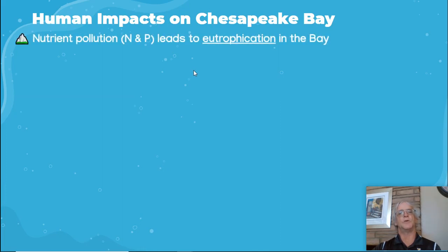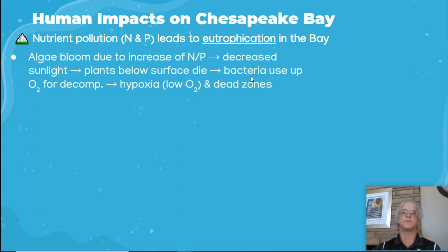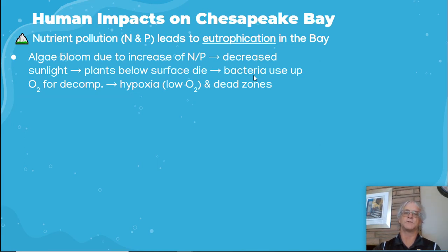Human impacts in the Chesapeake Bay: nutrient pollution — the nitrogen and phosphorus — leads to eutrophication of the bay. Algae blooms are due to the increase in nitrogen and phosphorus. The algae blooms decrease sunlight so that plants below the surface die. The bacteria then break down the plants and use up the dissolved oxygen for decomposition. This leads to hypoxia, or low oxygen levels, and since there's not enough oxygen, the fish die — that's why it's known as a dead zone.